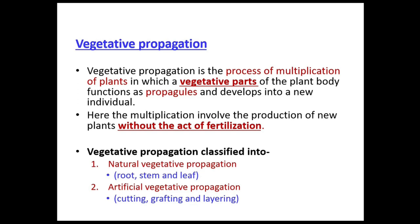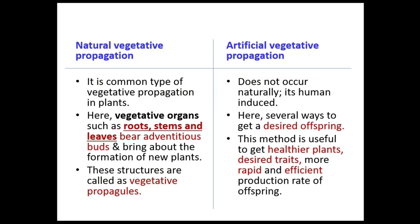Natural propagation is a common type in plants using vegetative organs such as roots, stems, and leaves as propagules. Artificial propagation does not occur naturally — it is human-induced. Because it is man-made, we can get desired offspring with specific characteristics.